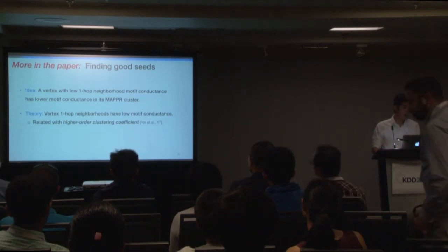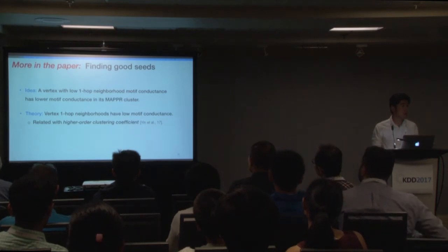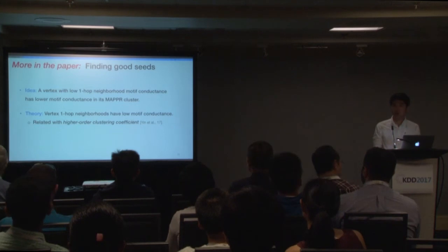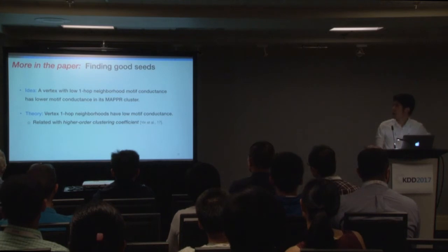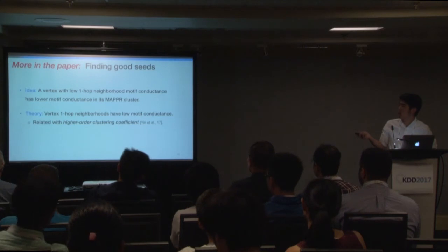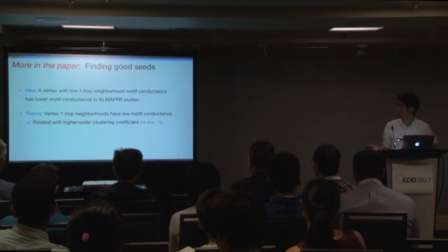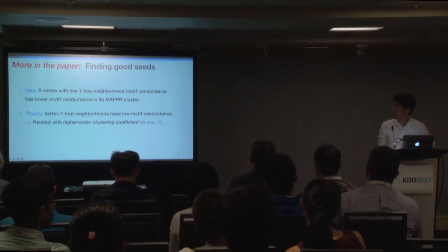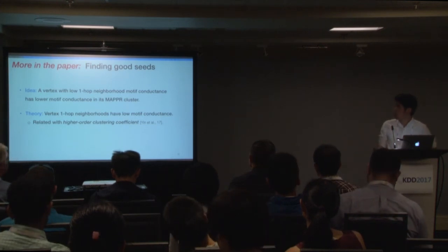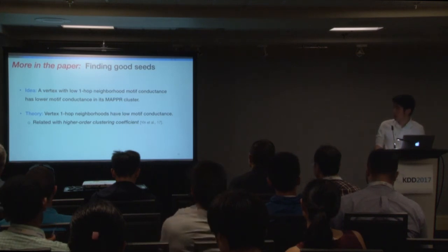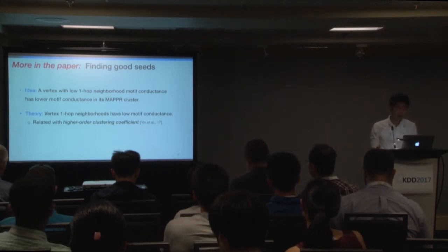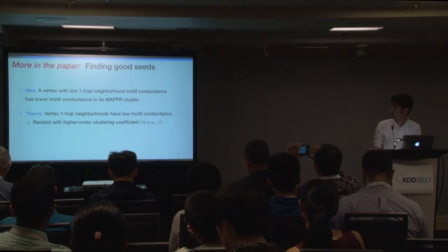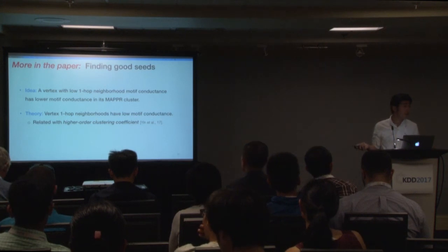In this presentation, I assumed that the seed input to the MAPR algorithm is given. But in our paper, we also consider the problem of finding a good seed — how can we find a seed such that running MAPR with that node gives a cluster with lower motif conductance. The idea is that vertices with low one-hop neighborhood motif conductance tend to have lower motif conductance in their MAPR cluster. There is an interesting motivating theory showing that a vertex's one-hop neighborhood has low motif conductance if the network has high higher-order clustering. I will skip the details, but all theoretical proofs are in the paper.